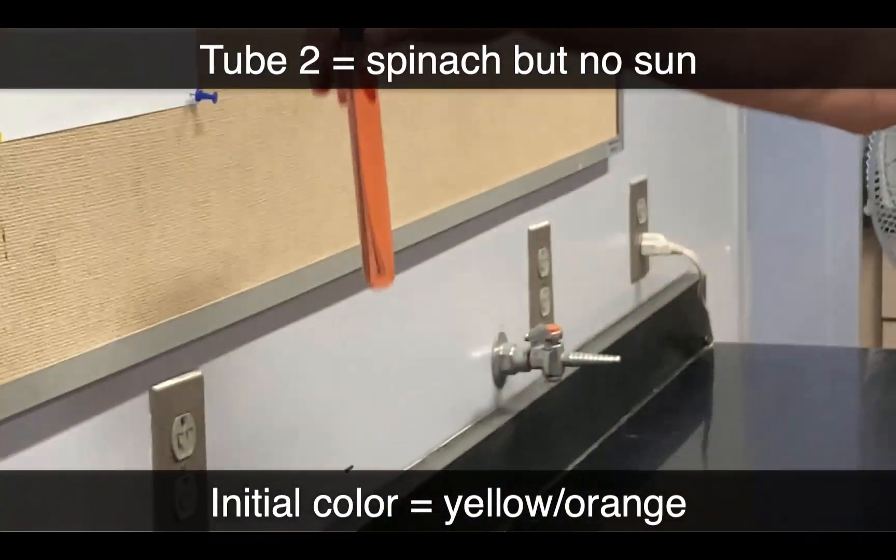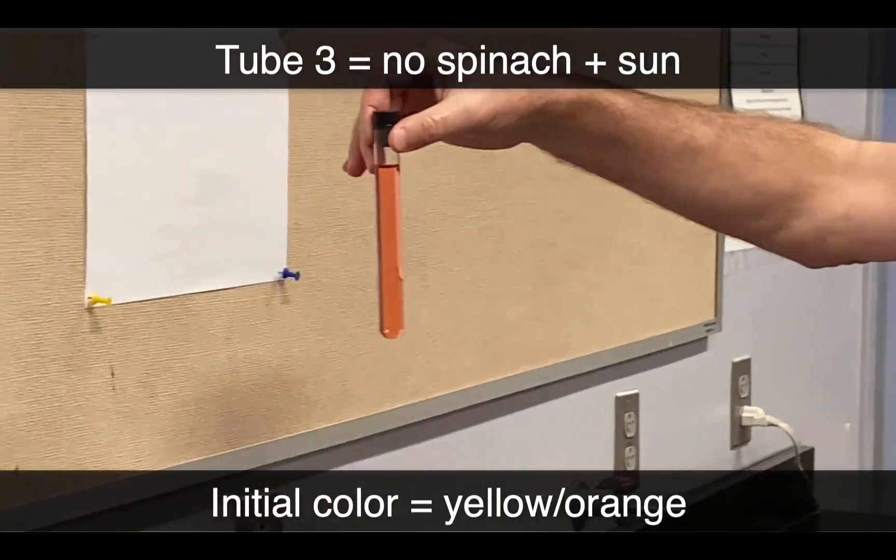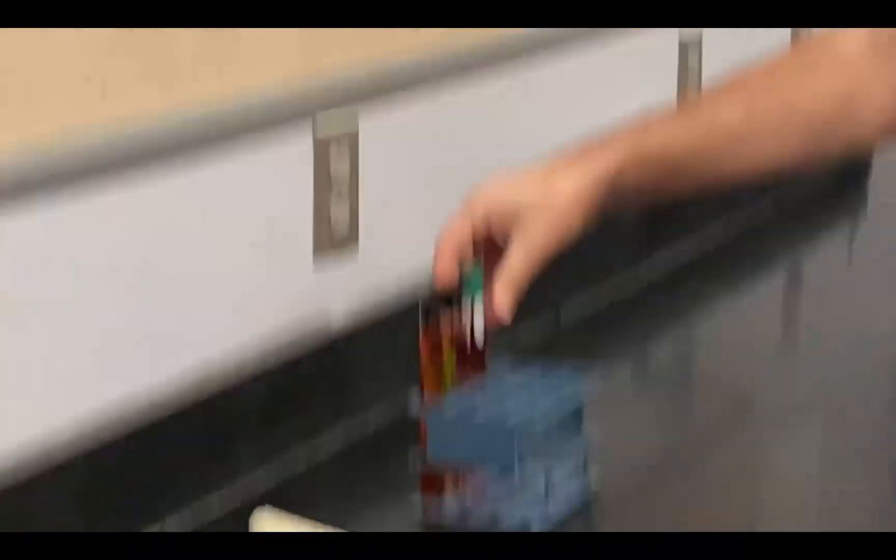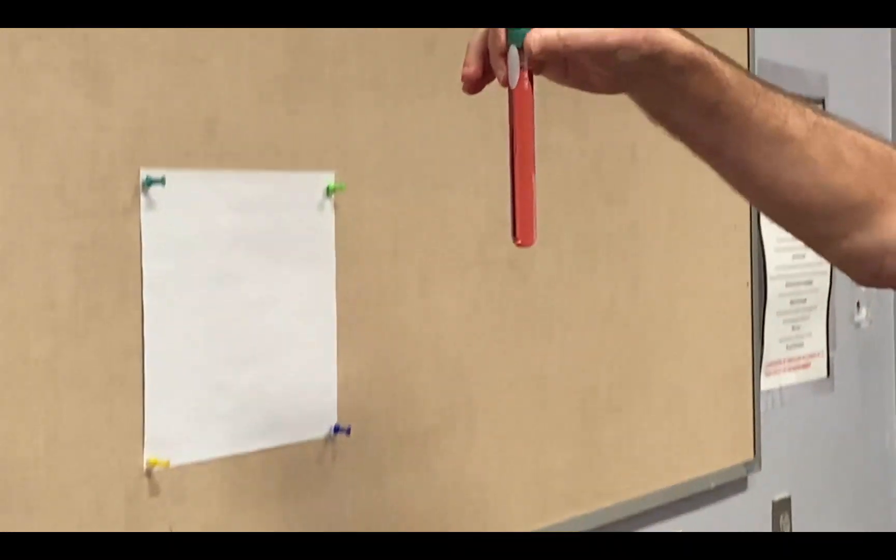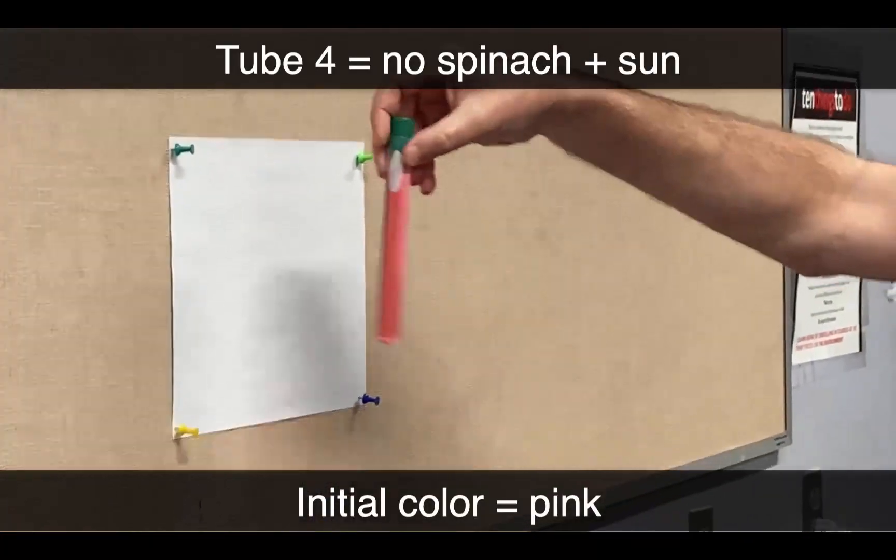Test tube number three received the same yellowish colored phenol red that tubes one and two did. Then we have our original mix of phenol red which was definitely on the pink side in tube number four.